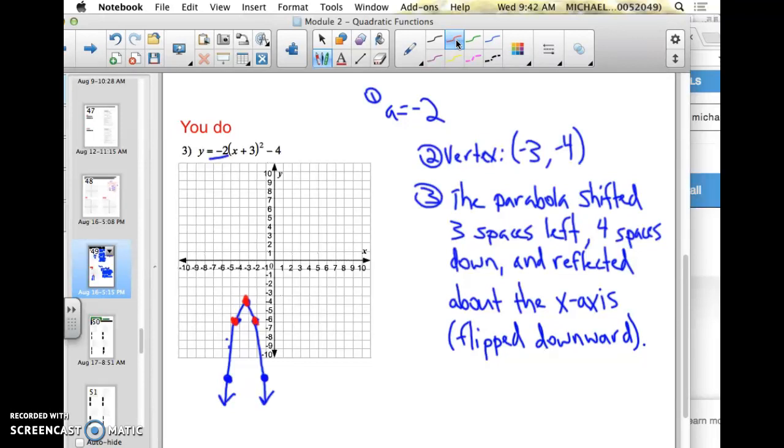And then from these 2 points, I went over 1, down 6, rough estimate, because it goes off the graph. And I connected my points. So there is the parabola of the given function.